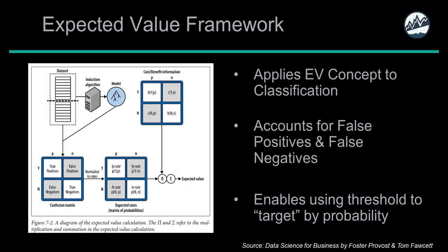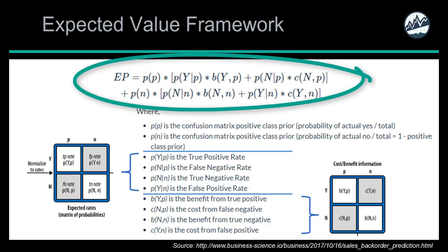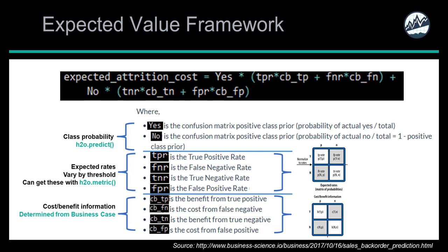This approach is similar to using the gain and lift chart to hone in on high flight-risk individuals discussed in chapter 5 on H2O performance. Mathematically, the expected value framework combines class probabilities, expected rates, and cost-benefit information. We can replace the mathematical expression with code, where the expected attrition cost is a function of the class probabilities from the H2O prediction output, the expected rates returned from the H2O metric function as a function of the threshold selected, and the cost-benefit information determined by the data scientist using knowledge of the business case.